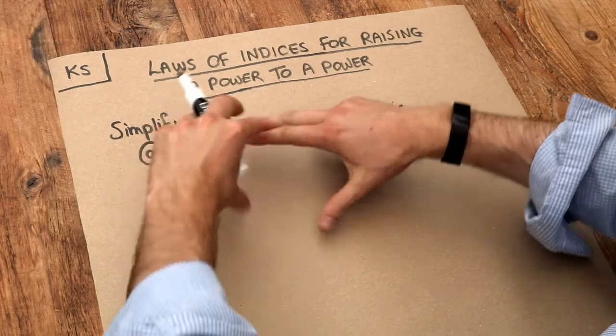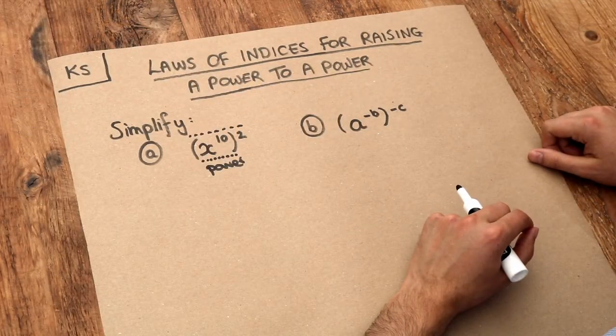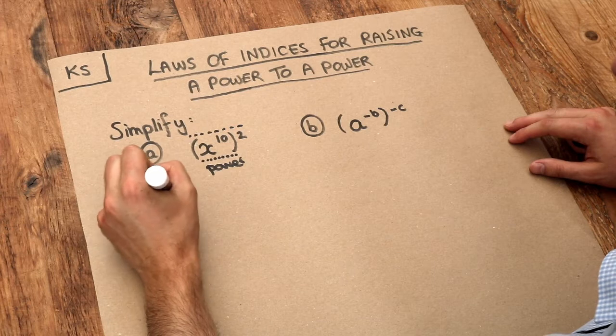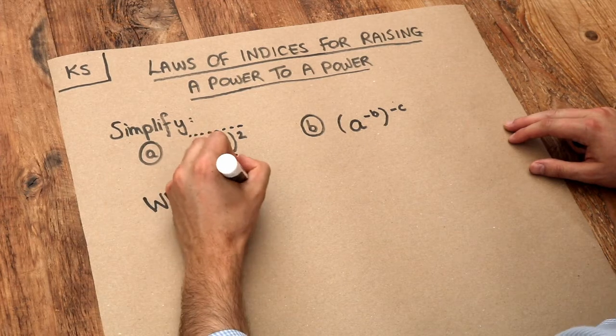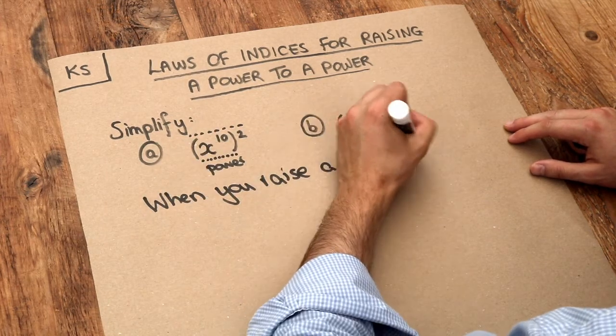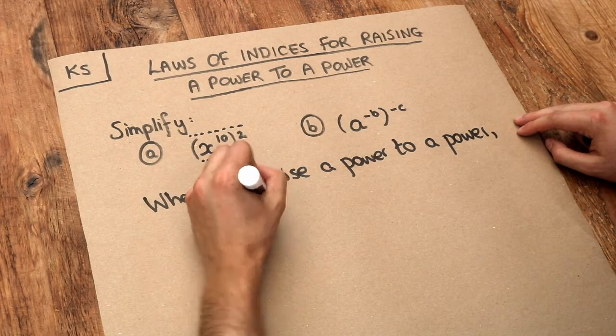So you're turning power into a sort of like a bigger power as such. And the rule is this: when you raise a power to a power, multiply the indices.